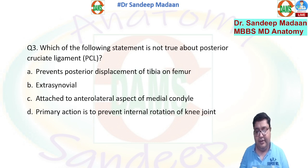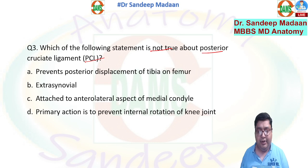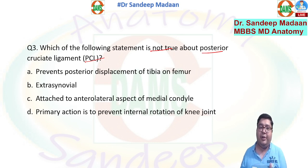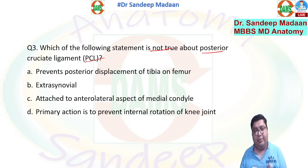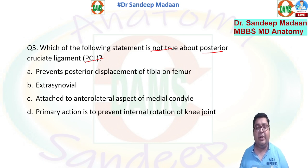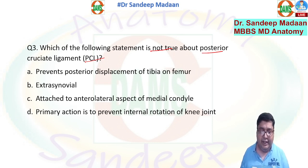Which statement is not true about PCL? PCL and ACL both have their primary attachment on the tibia and they prevent displacement of the tibia. For example, ACL is attached anteriorly on the tibia and will prevent anterior dislocation of the tibia. PCL is present on the posterior aspect of the tibia, going onto the femur, so it will prevent posterior displacement of the tibia.